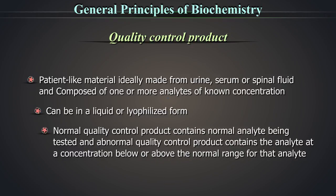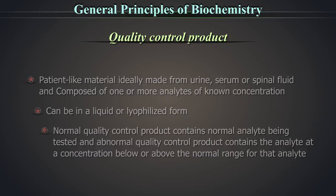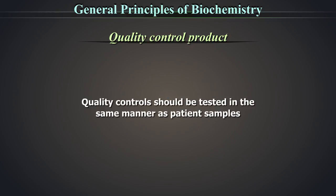Normal quality control product contains a normal analyte being tested and abnormal quality control product contains the analyte at a concentration below or above the normal range for that analyte. Quality controls should be tested in the same manner as the patient samples.